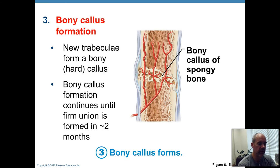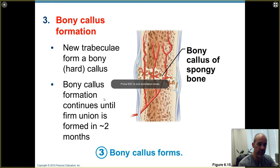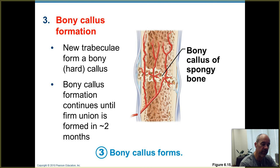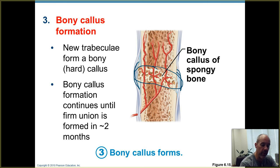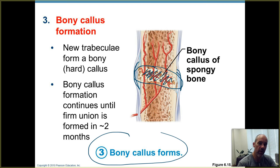Those osteoblasts replace that soft tissue cartilage over a period of a couple of months, replacing the fibrocartilaginous callus with spongy bone. Notice you've still got a wider area of bone that has developed compared to the original bone, and there's also bone all the way across the medullary cavity. This takes about two months and is called a bony callus because it has not yet resumed its normal original shape.